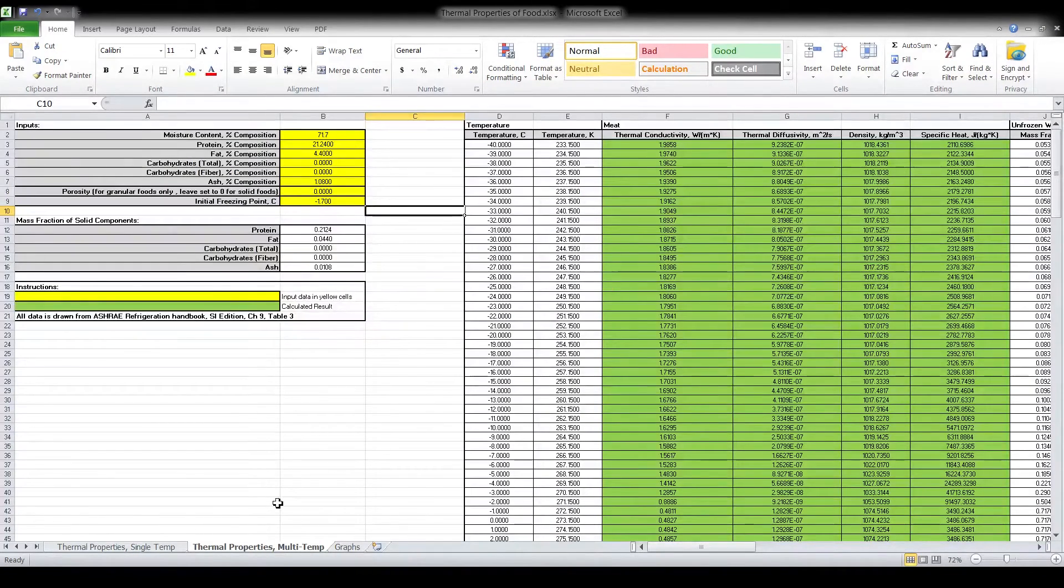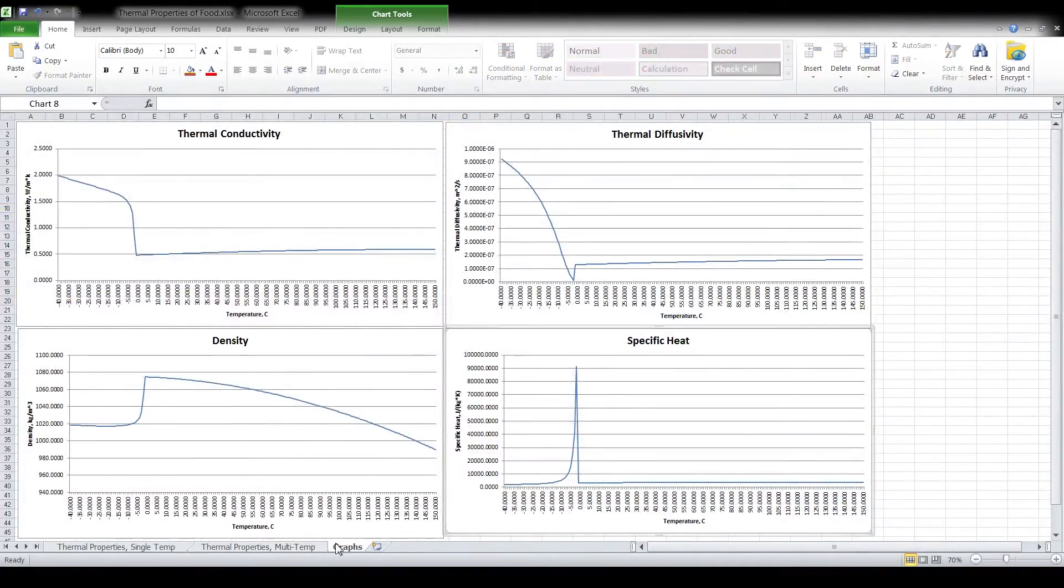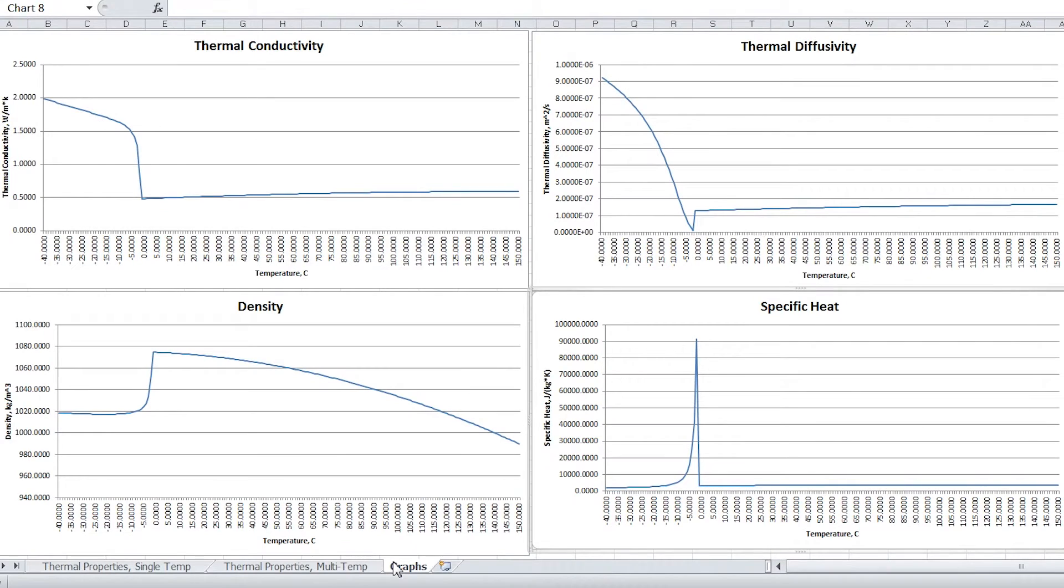Now, given the same inputs, the model creates a temperature-dependent table of the thermophysical properties of the lean beef sirloin for the range of temperatures for which the model is valid. We can copy these tables directly into SolidWorks simulation to account for the temperature-dependent behavior of the meat's thermophysical properties.